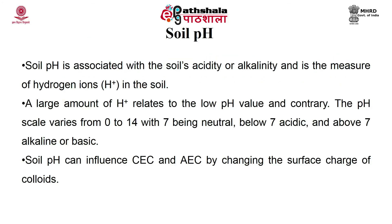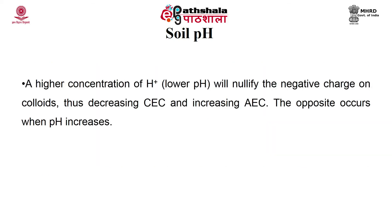Next is soil pH. Soil pH is associated with the soil's acidity or alkalinity and is the measure of hydrogen ions in the soil. A large amount of hydrogen relates to a low pH value, and vice versa. The pH scale varies from 0 to 14, with 7 being neutral, below 7 acidic, and above 7 alkaline or basic. pH can influence cation exchange capacity and anion exchange capacity by changing the surface charge of colloids. A higher concentration of hydrogen ions will nullify the negative charge on colloids, thus decreasing cation exchange capacity and increasing anion exchange capacity. The opposite occurs when pH increases, as shown in figure 27.3.